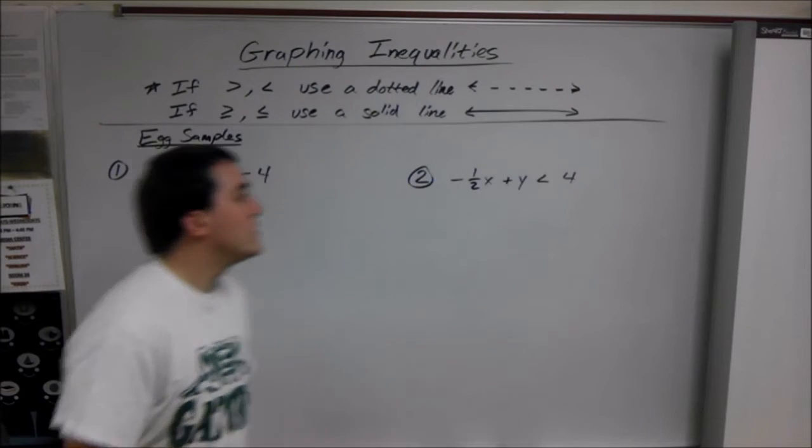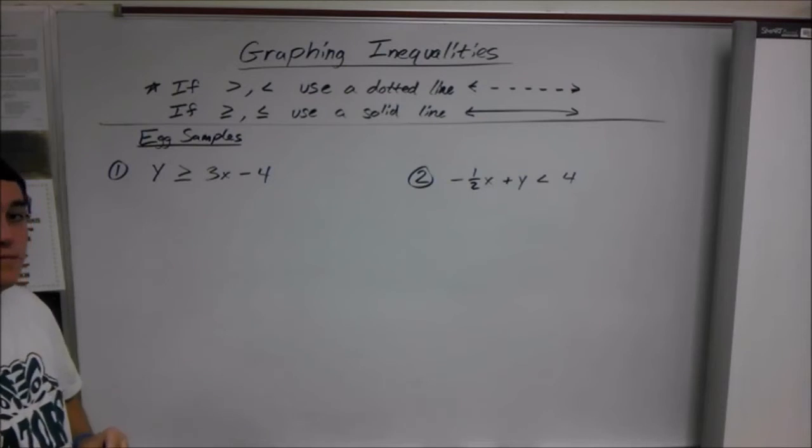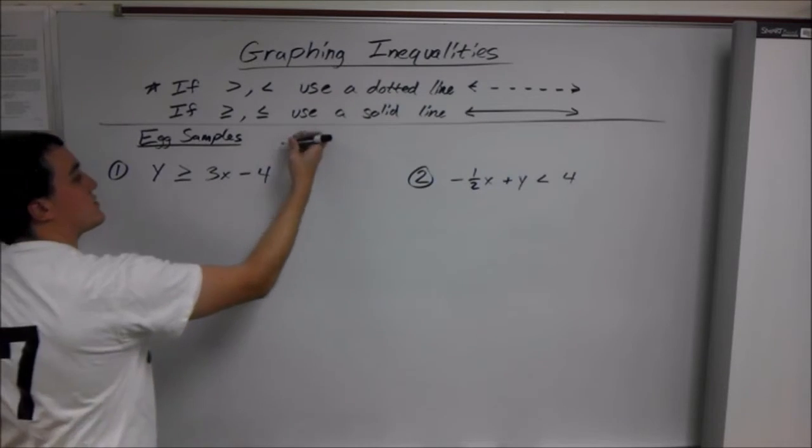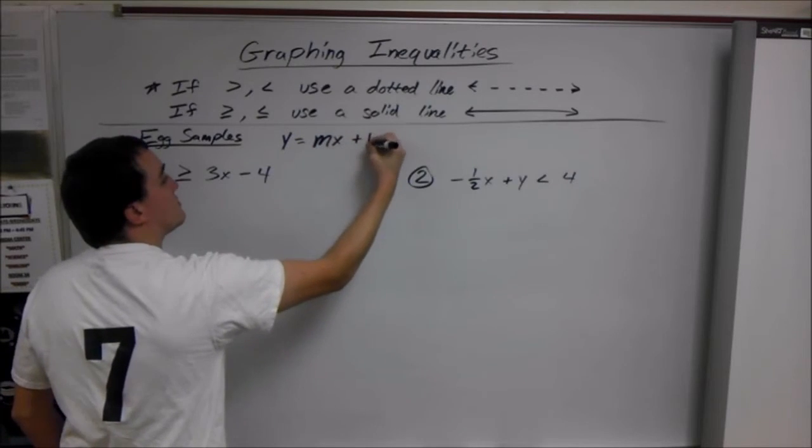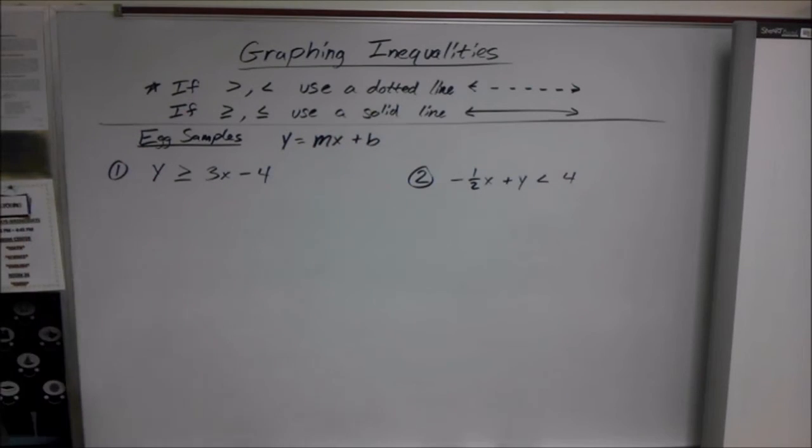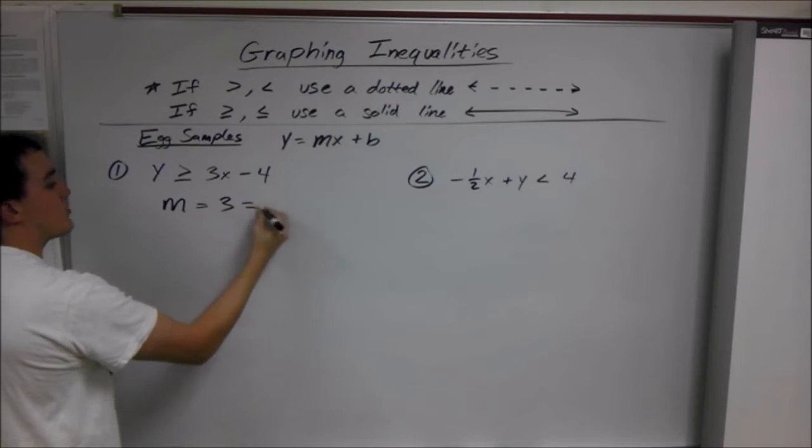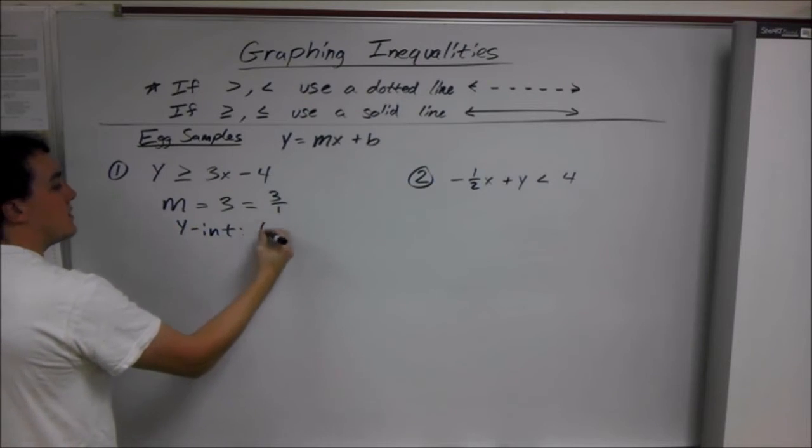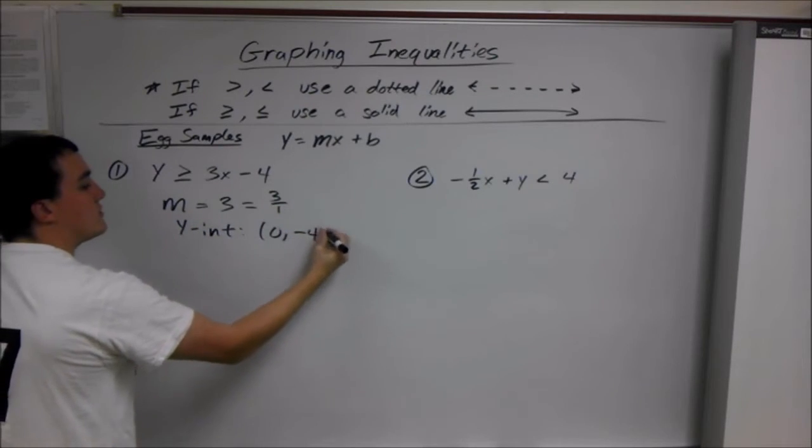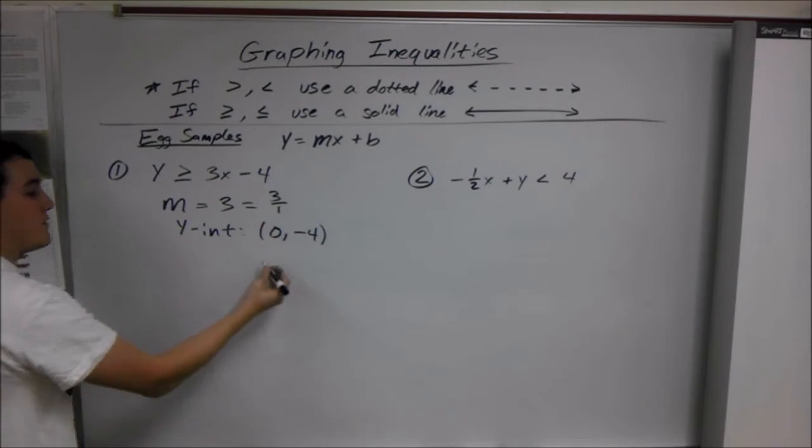Alright, so for the first one, made it really easy, your slope is just the number in front of x, because it's y equals slope times x plus b, slope intercept form. So our slope here is 3, or 3 over 1, and our y intercept as a point is 0 comma negative 4. That's our b, b is y intercept. So, now we can graph it.